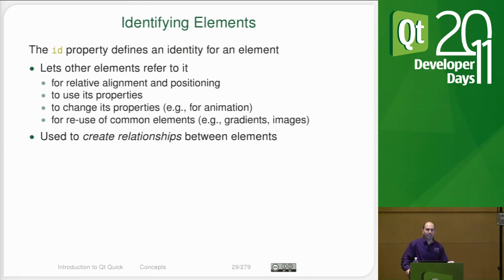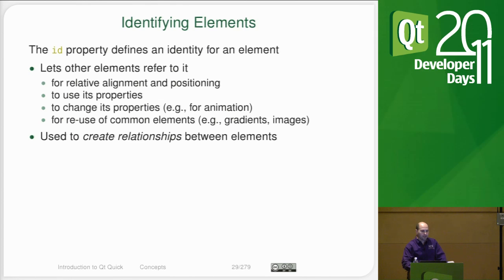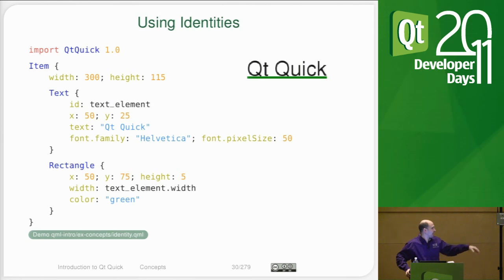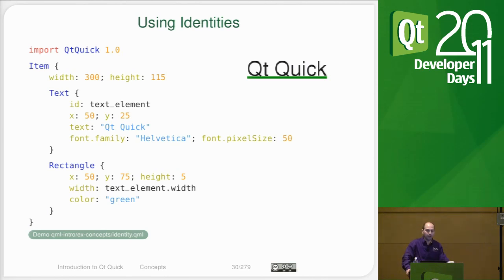IDs are also useful because you can have access to your elements so that you can change them dynamically, and you can also use these IDs to lay out your dialogues and screens — to say that I want one item to be positioned relative to another item. You're going to use these quite a bit. General rule of thumb is almost every item that's not just a simple container is probably going to have an ID. For example, we're making an item and underneath that a text and a rectangle. The text element has an ID of 'textElement'. The rectangle's width is being set to the text element's width — another example of binding, but instead of using one of our own properties we're actually using a property of text element. Any time the width of text element changes, the width of this rectangle is going to change.